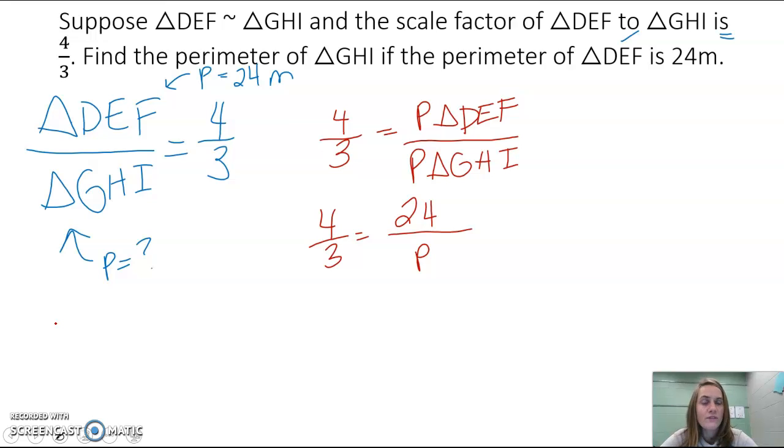Now we have a proportion we can solve by cross-multiplying. Take the numerator of one fraction times the denominator of the other, so 4 times P, equals the numerator of the other times its denominator, 24 times 3. So 4P equals 72.